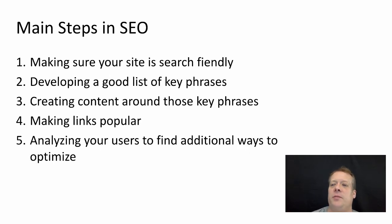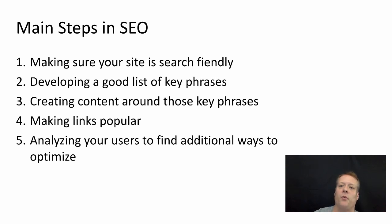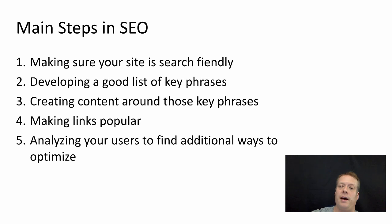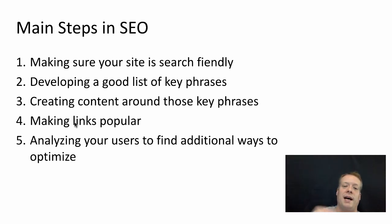So there are five main steps in conducting search engine optimization. One is making sure your site is search friendly — you need to make sure that the robots and the crawlers can actually access your site. The second is developing a good list of key phrases. You want to have a list of phrases that people will often type in when they're searching for something like your webpage, and that list should be well manicured and part of the pages on your website. You should be creating content around those key phrases, and you should do your best to make the links that point to your website popular. You should also analyze your users to find additional ways to optimize by adding new key phrases and finding new ways to look at some of the other issues.